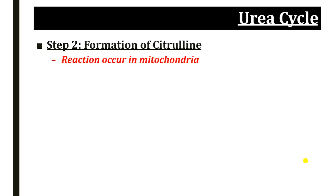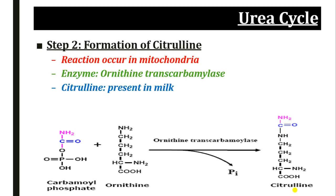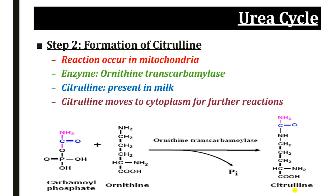The second step is the formation of citrulline, which also takes place in the mitochondria. The carbamoyl phosphate synthesized in the first step reacts with ornithine coming from the cytoplasm, in the presence of ornithine transcarbamylase enzyme, and gets converted into citrulline. If the enzyme of the third step is absent, citrulline will accumulate in blood, leading to citrullinemia. Since citrulline is present in milk, milk must be avoided in patients suffering from citrullinemia. At the end of the second step, citrulline moves to the cytoplasm for further reaction.